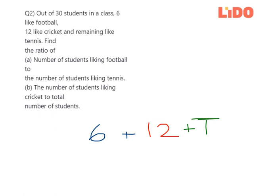The total number of people when you add them up is 30, because that is the total number of students in the class. So the number of people who like tennis are 30 minus (6 plus 12 is 18), so 30 minus 18 which is 12. The total number of people who like tennis are 12 students.